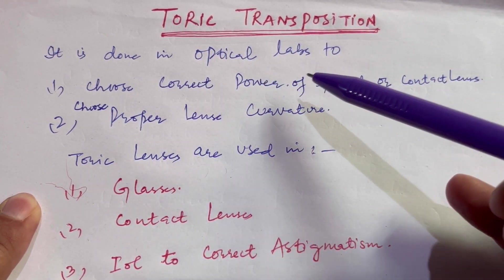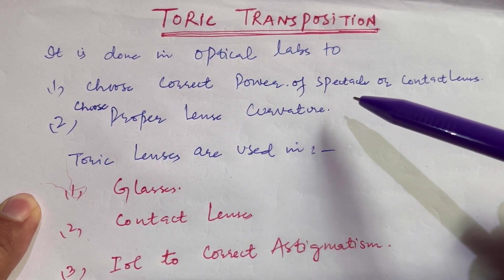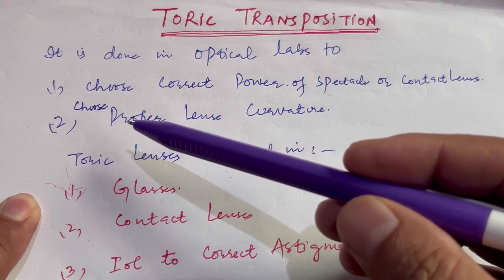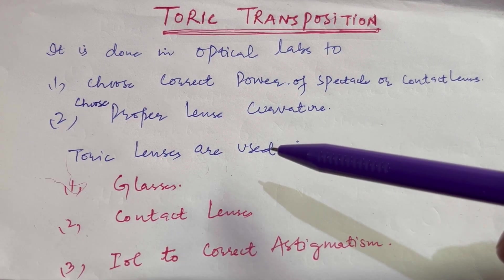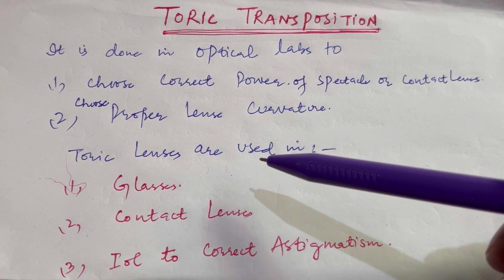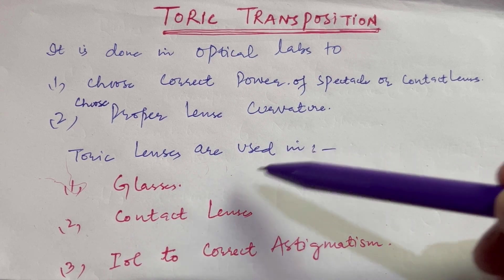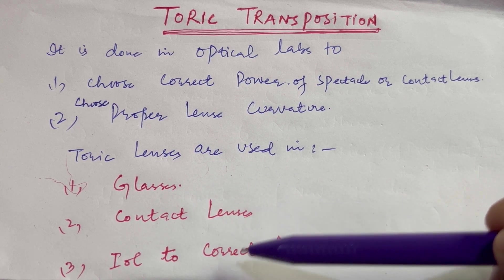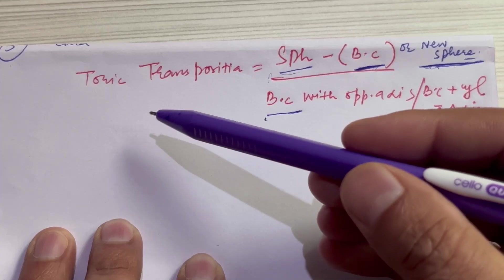Toric transposition is done in optical labs to choose the correct power of spectacles or contact lenses, and to choose proper lens curvature. Toric transposition is done in toric powers, or toric lenses, and these toric lenses are used in glasses, contact lenses, and IOL to correct astigmatism.